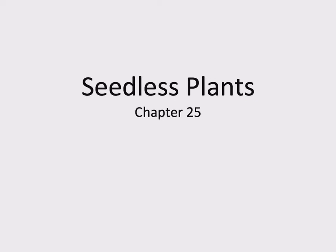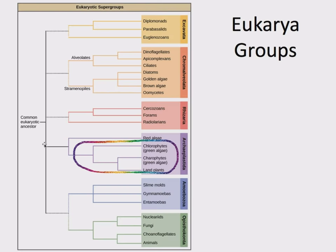And that does it for fungi. Moving on, we now come to plants. Plants are going to be divided into several chapters. We're starting with Chapter 25, seedless plants. Plants were located here in this supergroup Archaeplastida. This is a clade — a monophyletic group — an ancestor and all of its descendants, all sharing the name of being called plants. Kingdom Plantae, a monophyletic group.